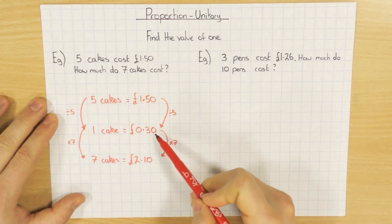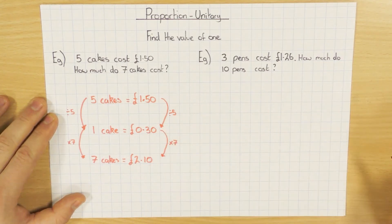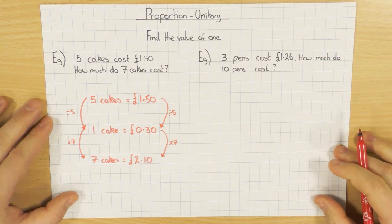Make sure if you're dealing with money, like I've done here, you do do it to two decimal places. Otherwise you will lose marks when dealing with money. So nice and simple example there.